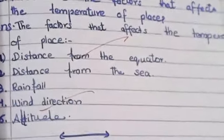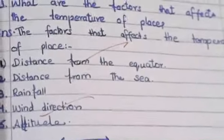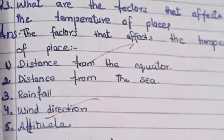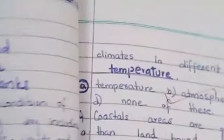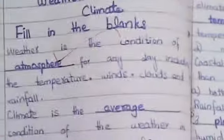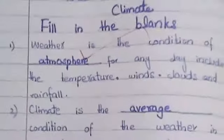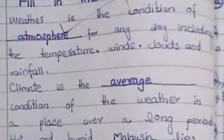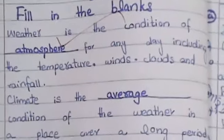Number five is altitude. Now for the fill-in-the-blanks section: number one, weather is the condition of the atmosphere — fill in the blank with 'atmosphere.' Number two, climate is the blank condition of the weather in a place over a long period — fill in 'average.'